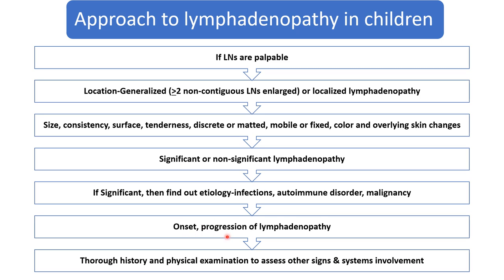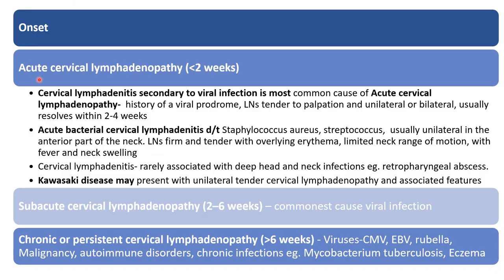According to onset and progression, we label lymphadenopathy as acute, subacute, or chronic. History and physical examination also give clues about the etiology. In cervical lymphadenopathy, if the patient has acute onset and lymphadenopathy persists less than 2 weeks, we label it as acute cervical lymphadenopathy. It can be seen in viral infection with a viral prodrome — lymph nodes are tender on palpation, either unilateral or bilateral, and resolve within 2 to 4 weeks. Viral infection is the most common cause of acute cervical lymphadenopathy in children. Bacterial infections — such as Staphylococcus, Streptococcus group A and group B — can also lead to cervical lymphadenopathy, but bacterial lymphadenopathy is usually unilateral.